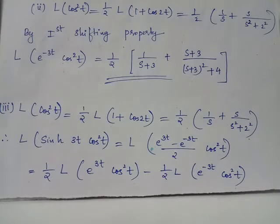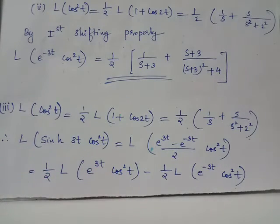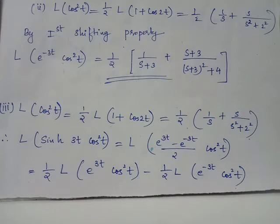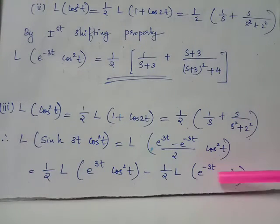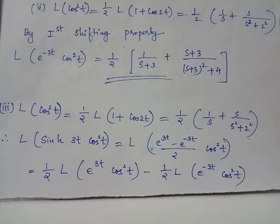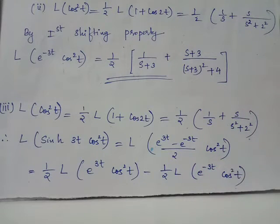In order to obtain the Laplace transform of e^(3t)·cos²(t), we replace every s by (s minus a) where a equals 3. To obtain the Laplace transform of e^(-3t)·cos²(t), we replace every s by (s minus a) where a equals negative 3.